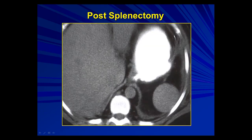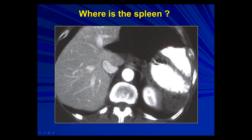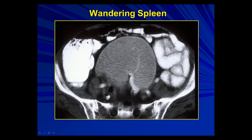In a patient who's had a splenectomy, what is that in the left upper quadrant behind the stomach? That's an accessory spleen that has hypertrophied — small accessory spleens can hypertrophy. Wandering spleen is a normal variant where the spleen has a long pedicle and is free to move. A complication of wandering spleen is that it can twist, so wandering spleen can be complicated by splenic torsion.